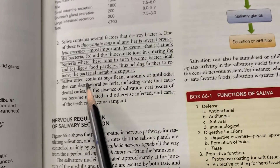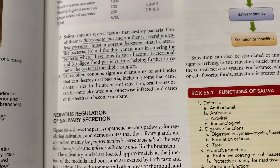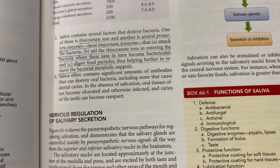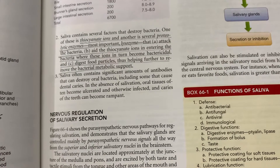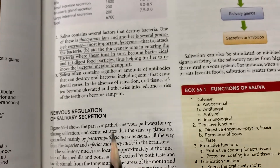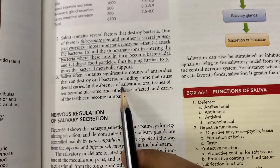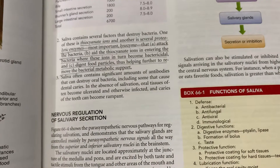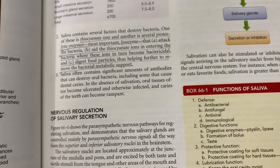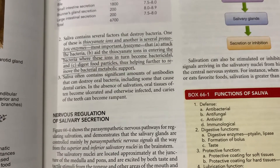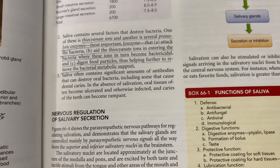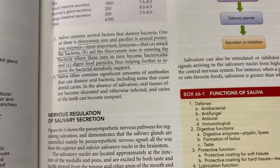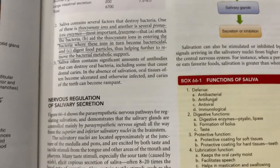Saliva often contains significant amounts of antibodies that can destroy oral bacteria, such as IgA. That is why in xerostomia, or absence of salivation, oral tissues often become ulcerated and infected, and dental caries can occur.